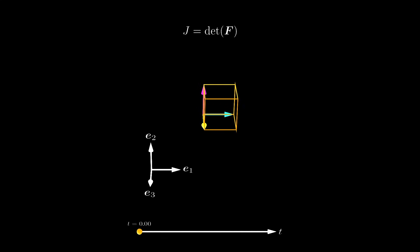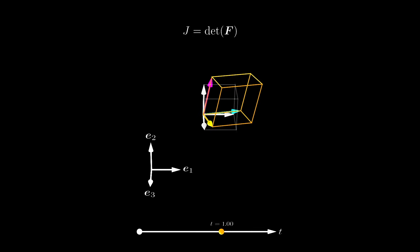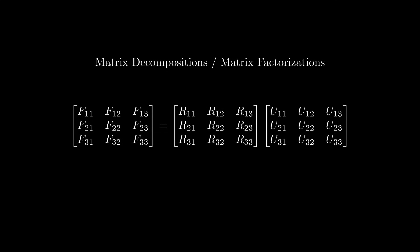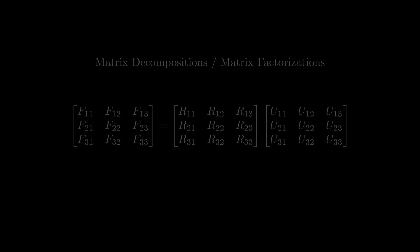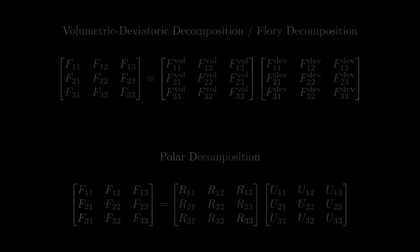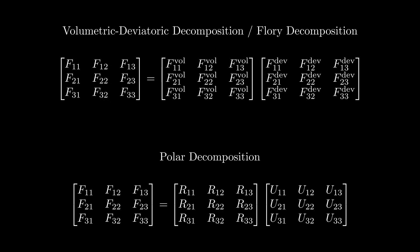has a surprisingly meaningful physical interpretation: the determinant tells us how much a small volume element in the undeformed configuration changes in volume upon deformation. In this video we will discuss other concepts from linear algebra — matrix decompositions. Specifically, we will look at the so-called volumetric-deviatoric decomposition and the polar decomposition, which are both very relevant from a practical perspective.